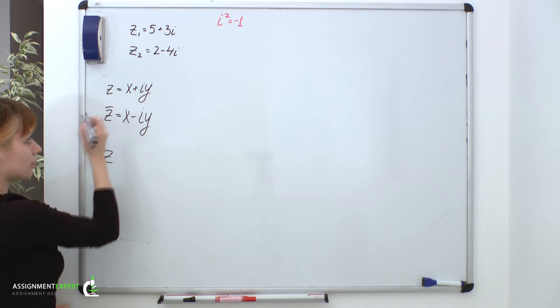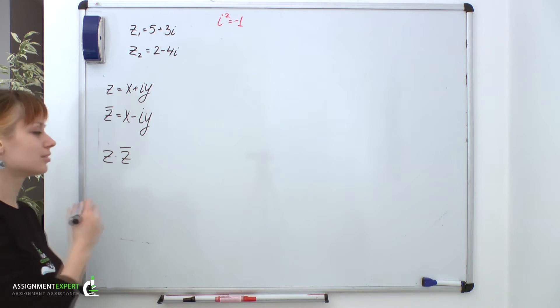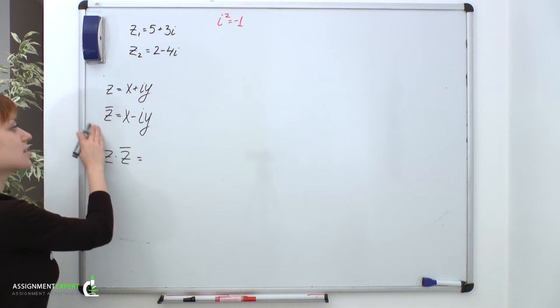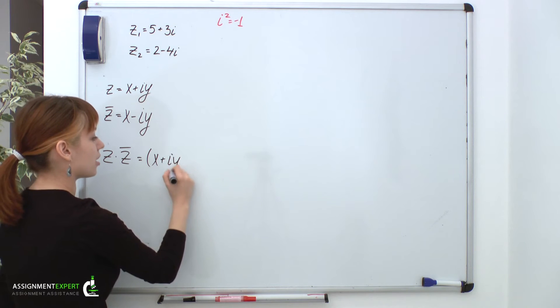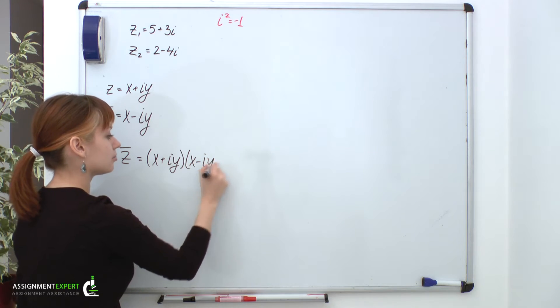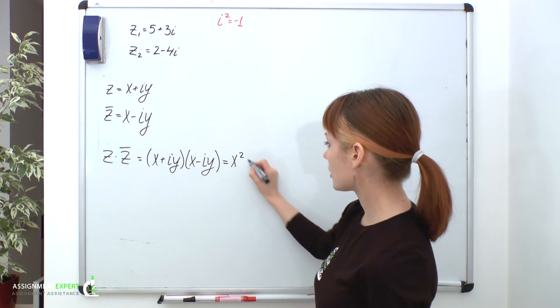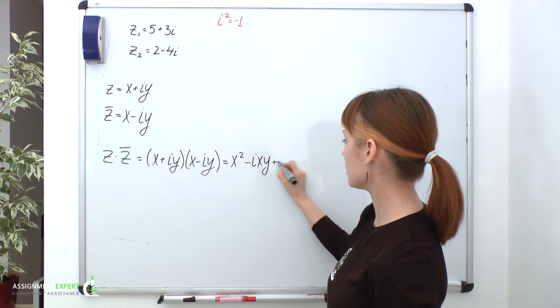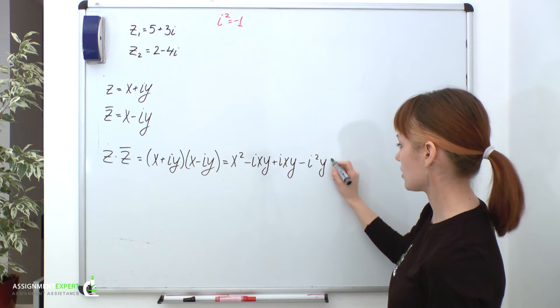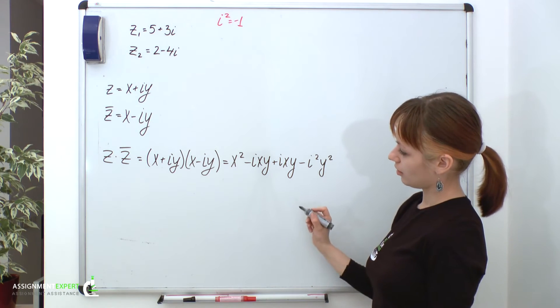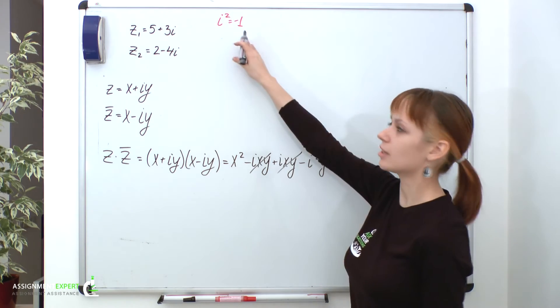The important property of complex conjugates is that their product is a real number. Now, let's check that. So, we'll multiply our z and z dash. We'll have x plus i y multiplied by x minus i y, which is equal to x squared minus i x y plus i x y minus i squared y squared. These two cancel out.